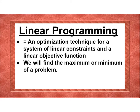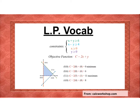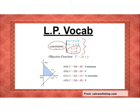Linear programming is an optimization technique for a system of linear constraints and a linear objective function. We're going to find the max and min of a problem — we just want to remember that we're trying to maximize or minimize a problem. Constraints are basically a system of inequalities; sometimes you'll have 3, 4, or 5. We're often going to include x ≥ 0 and y ≥ 0 because these are usually word problems and we don't need negative answers.